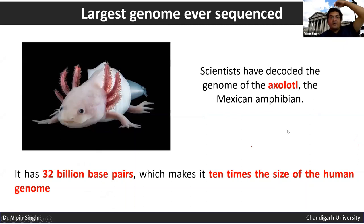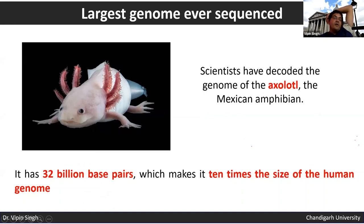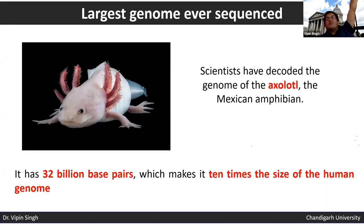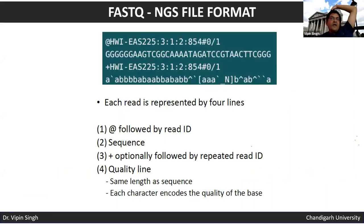Scientists decoded the genome of the axolotl, the Mexican amphibian. The human genome is 3.2 billion base pairs; the axolotl genome is approximately 32 billion base pairs. We are interested in why some organisms have such excessive genome size — this relates to the C-value paradox, which states that genome size has no direct correlation with the complexity of the organism.